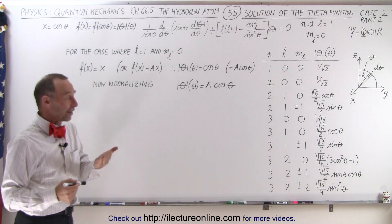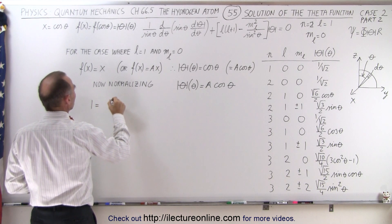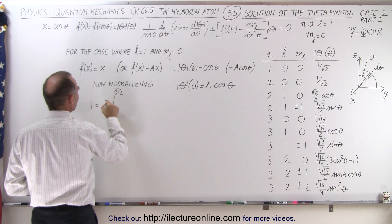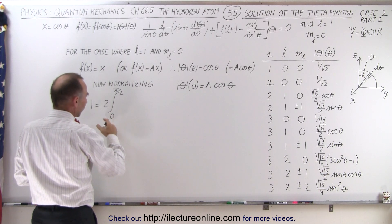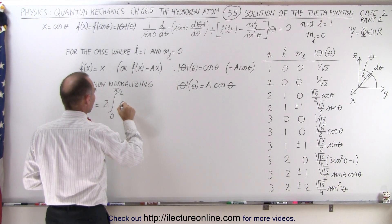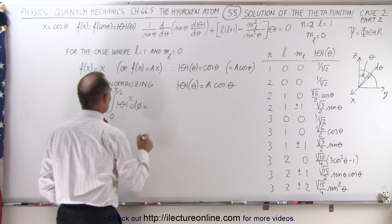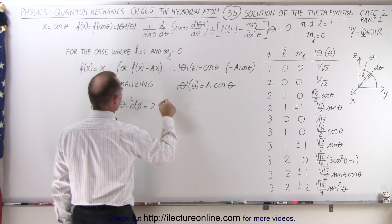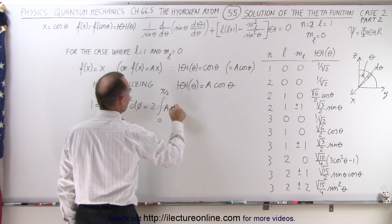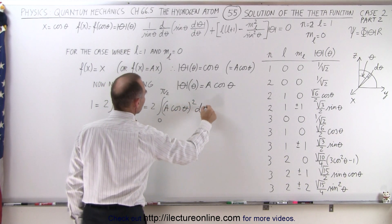So now to find the value for a, we need to normalize this function, so that means that one is equal to the integral from zero to pi over two times two, because after all I'm only going half the distance, I have to multiply the integral by two, and then the function, it will be the function squared times d phi.